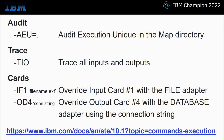Here are some examples of basic command option overrides. For example, dash AEU equals dot will produce an audit execution log with a unique file name in the map directory for every execution. Dash TIO will turn on tracing for all input and output cards. Dash IF1 followed by a file name will override input card 1 with the file adapter and produce the file given in the file name. Dash OD4 followed by a connection string will override output card number 4 with the database adapter and use the connection string to connect to and optionally execute commands on the database. The link at the bottom of the screen takes you directly to the documentation for a summary of all command execution overrides.